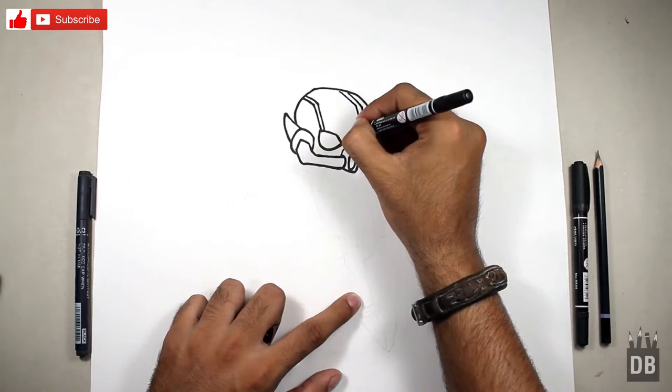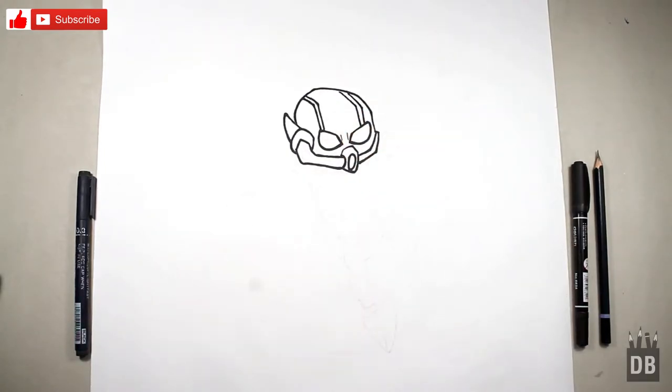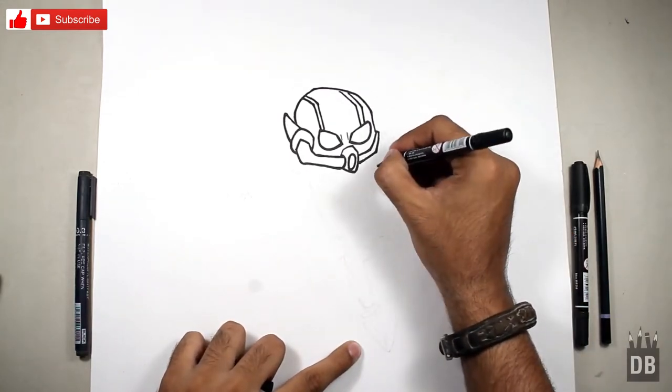Now we are going towards the body. For body we make a line. This is in diagonal angle, he is jumping from somewhere.